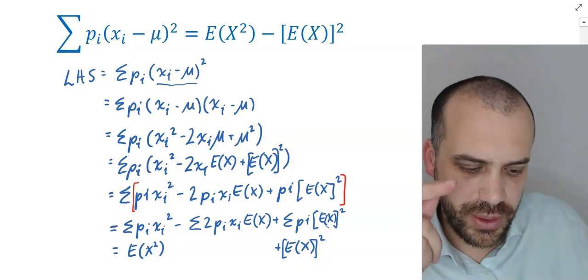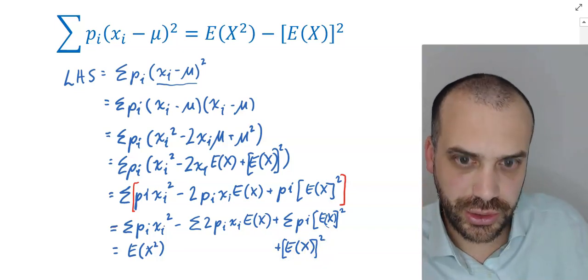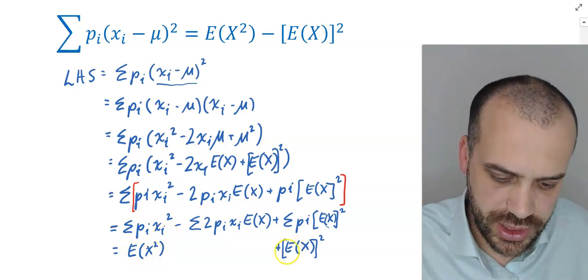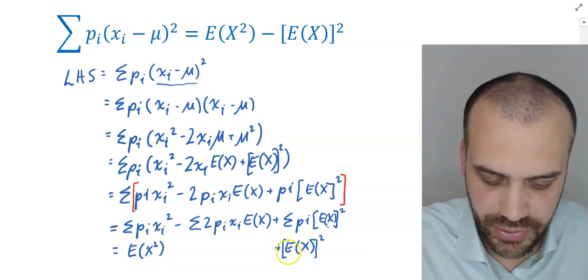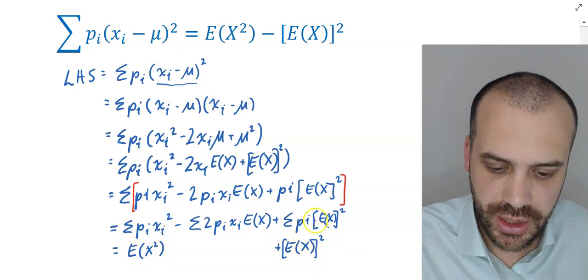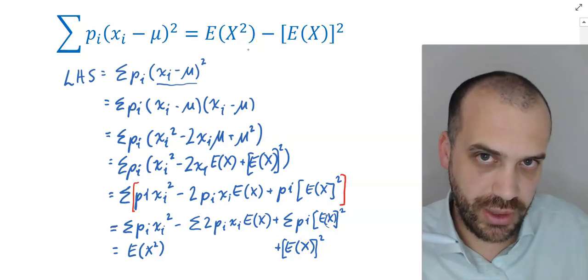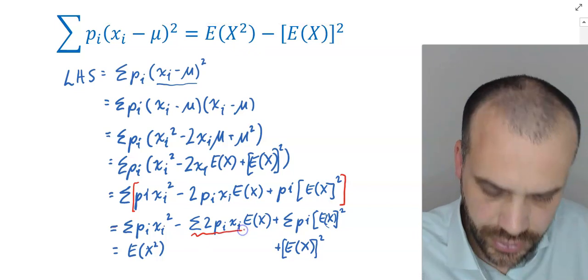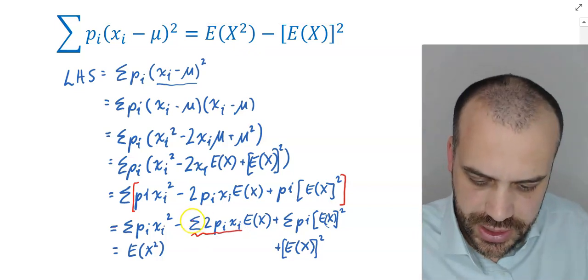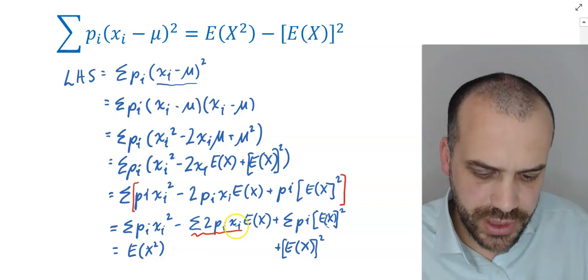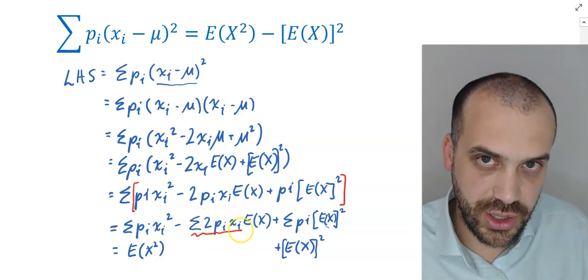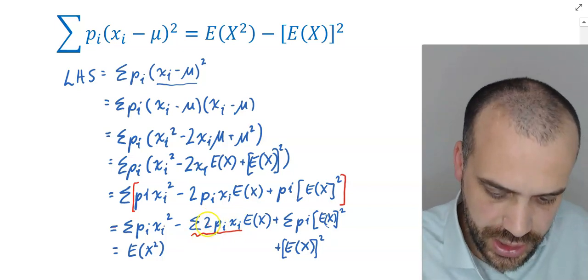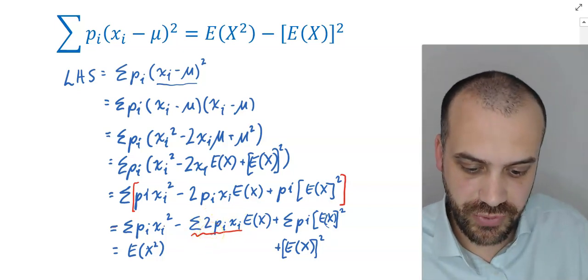Now you can see we're really getting close because we've got this E(X^2) here and we've got this expected value of x all squared, which is very close to what we're aiming for. Now take a look at this bit right here. All right, so this is the sum of 2 pi xi, but the sum of pi xi is our formula for expected value.